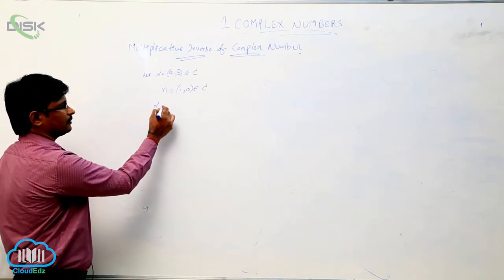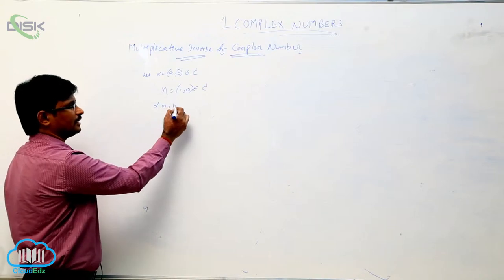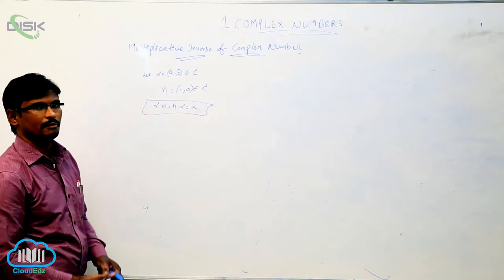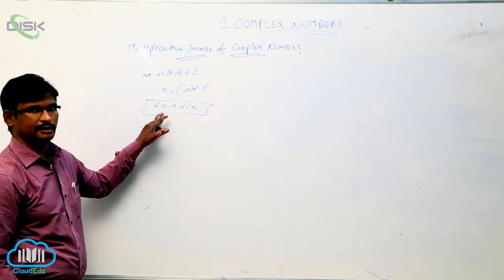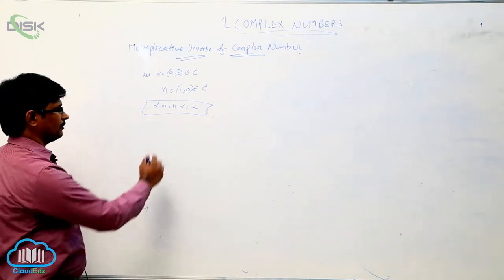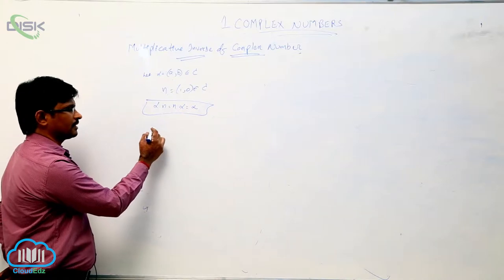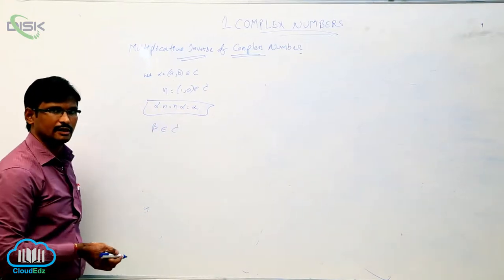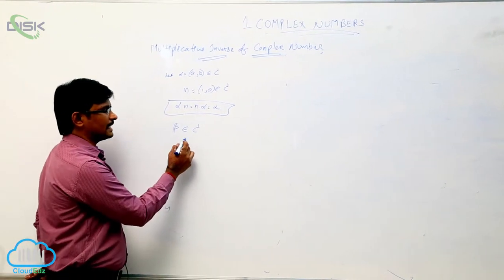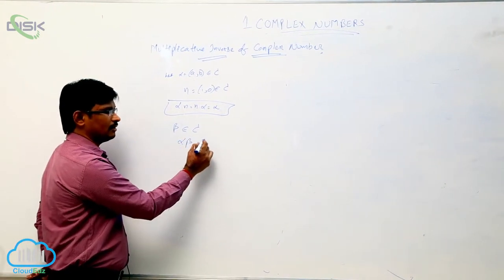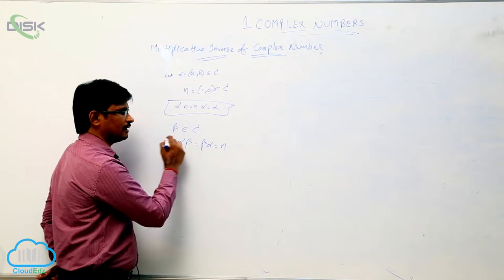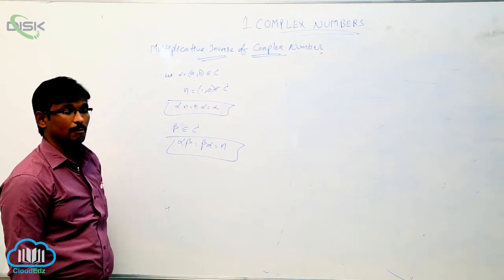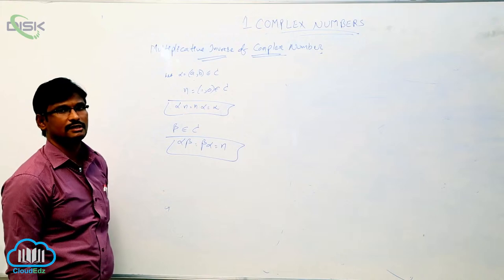Alpha into n equal to n into alpha equal to alpha. So this is the multiplicative identity in complex number. Now, one complex number beta belongs to the complex numbers — I am considering one complex number — which is satisfying alpha·beta equal to beta·alpha equal to n. Then we can say that beta is called the multiplicative inverse of complex number alpha.